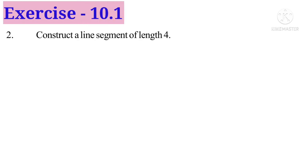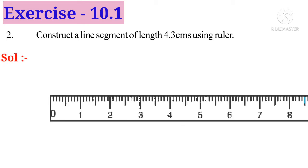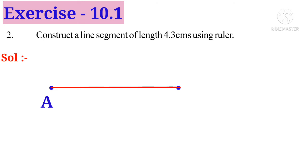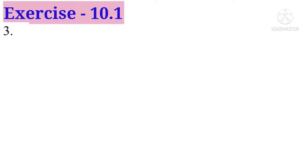Now number two: Construct a line segment of length 4.3 centimeters using ruler. Solution: Take the scale and mark a point at the zero and another point three small lines after four. Now join these line segments using scale. Now remove the scale and mark the points A and B. Now the line segment AB is 4.3 centimeters.